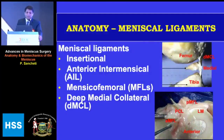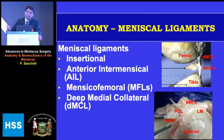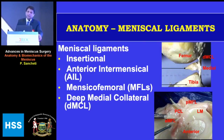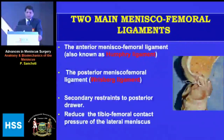There are meniscal ligaments which give stability and join the meniscus — the anterior intermeniscal ligament, the meniscofemoral ligaments, and the deep medial collateral ligament which attaches to the medial meniscus giving it congruity. In addition, there are coronary ligaments and meniscofemoral ligaments which give stability and attach the meniscus.